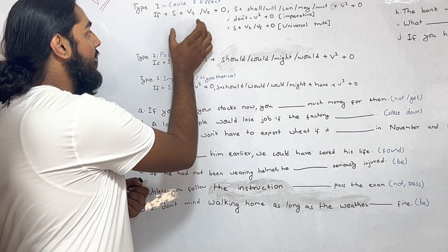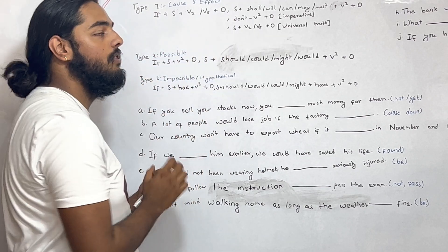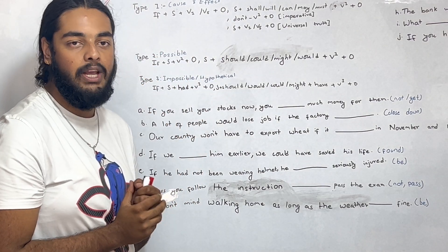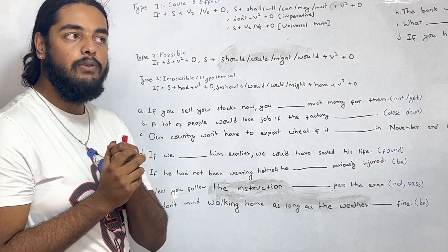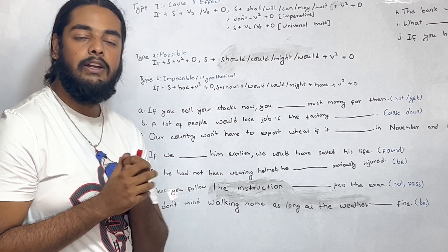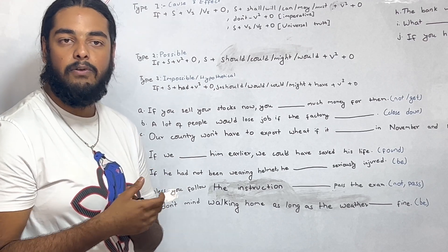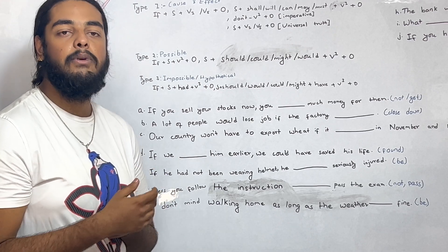And always the if-clause comes first. Now, some of the books call these type 4 and type 5.